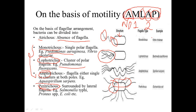So to summarize: A for Atricus, M for Monotricus, L for Lophotricus, A for Amphitricus, and P for Peritricus. You can remember all flagella arrangements by remembering AMLAP. Thank you for watching this video about the types of bacterial flagella. If you liked the video, please don't forget to subscribe and like the channel. Thank you.